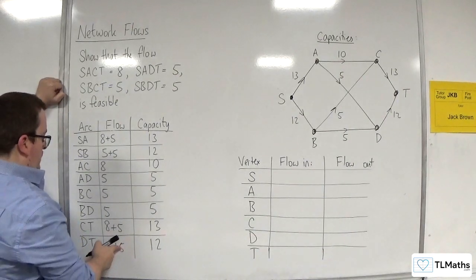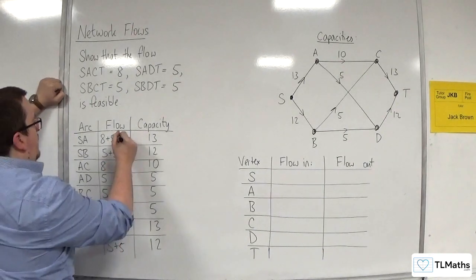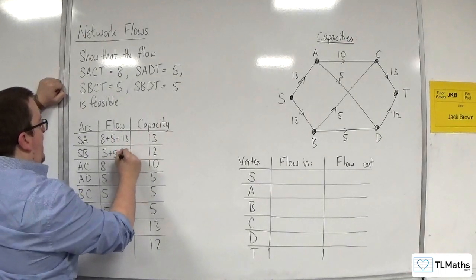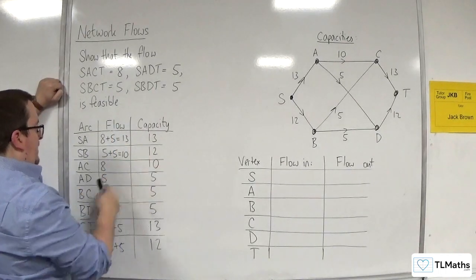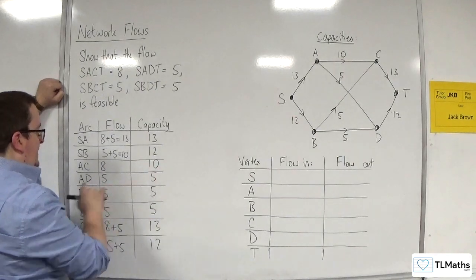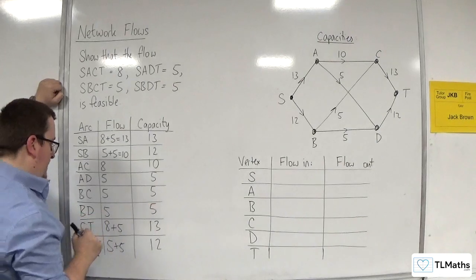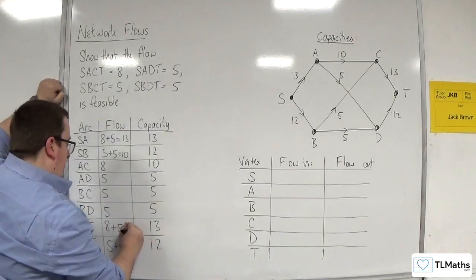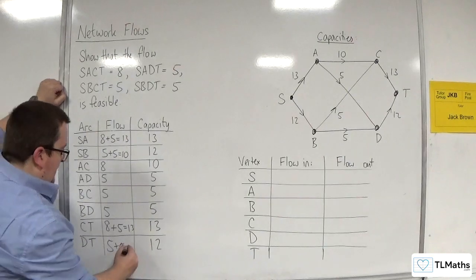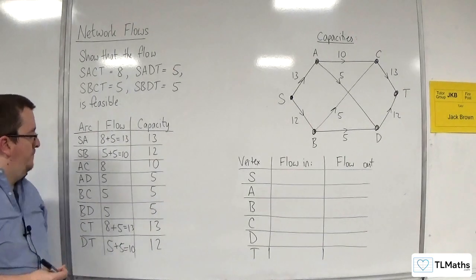So those are the four flows. SA is 13, which matches the capacity. SB is 10, which is under 12. AC is 8, which is under 10. AD is 5, the same as 5, so AD is saturated. BC is saturated. BD is saturated. CT is 8 plus 5 which is 13, so CT is saturated. DT is 10, which is under 12, so that's fine.